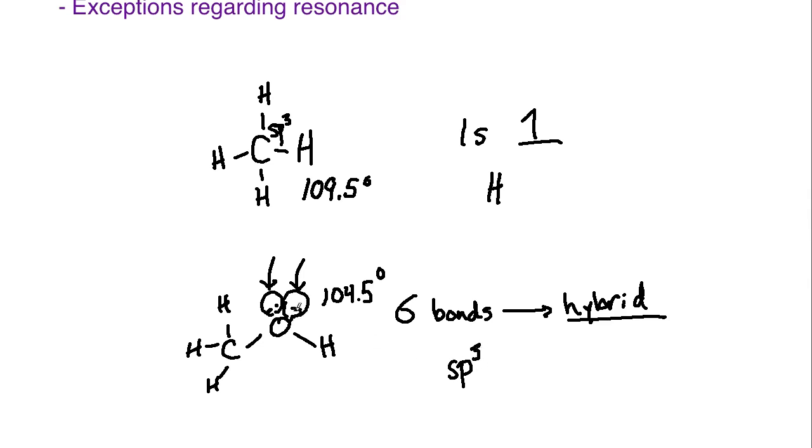Because if the lone pairs also exist in hybrid orbitals, then I need one, two, three, four hybrid orbitals, which means it's got to be S and all three of the p orbitals in order to get SP3.